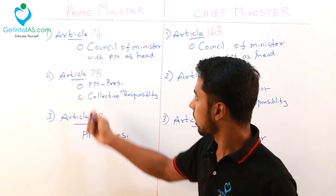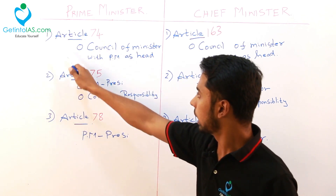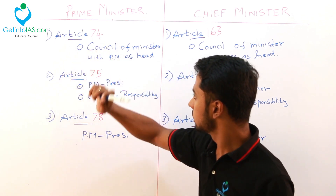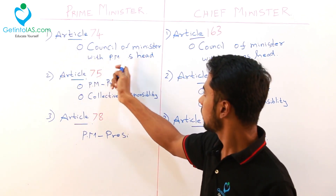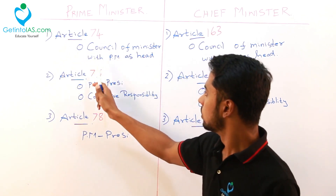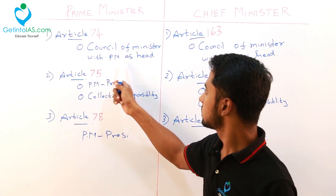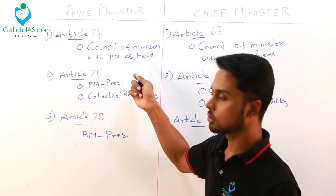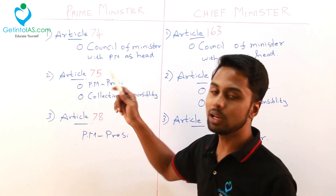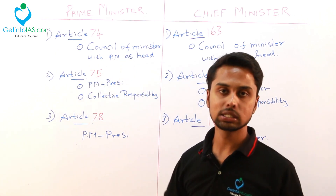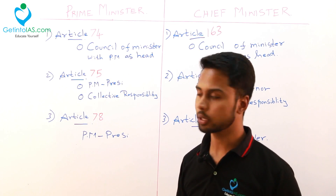These articles are for prime minister. Article number 74 says that there is a council of ministers with prime minister as the head, and they will aid and advise the president.